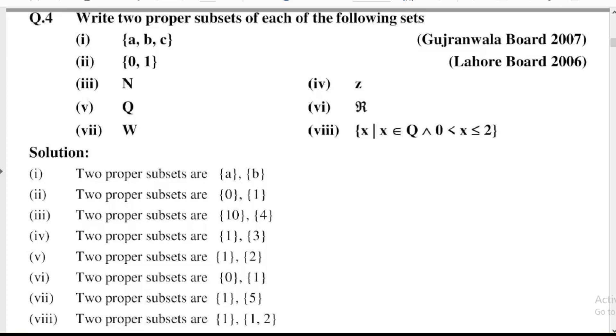Question Number 4: Write two proper subsets of each of the following sets. Part number 1, that is set {a, b, c}. So proper subsets are {a}, {b}.